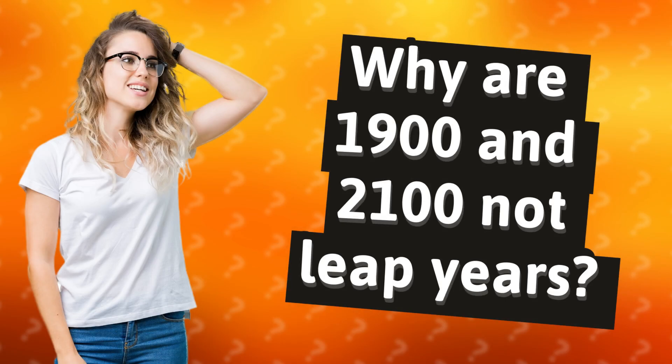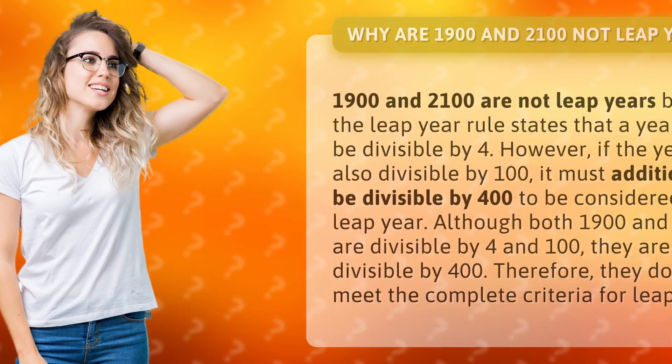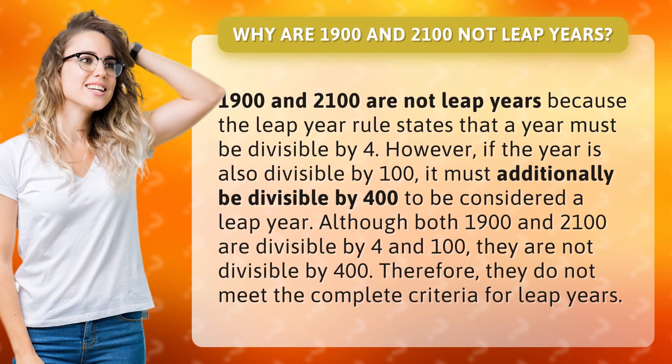Why are 1900 and 2100 not leap years? 1900 and 2100 are not leap years because the leap year rule states that a year must be divisible by 4. However, if the year is also divisible by 100, it must additionally be divisible by 400 to be considered a leap year.